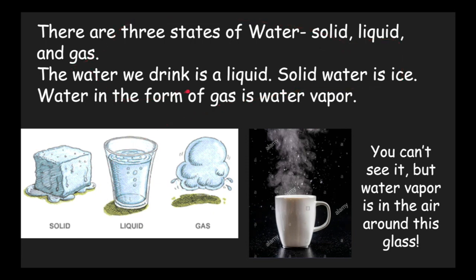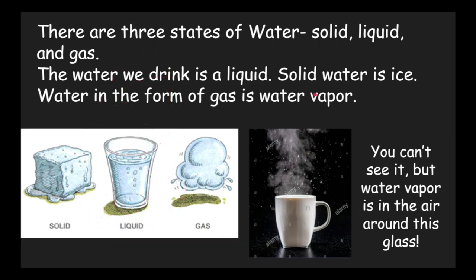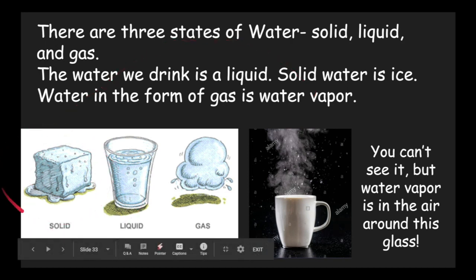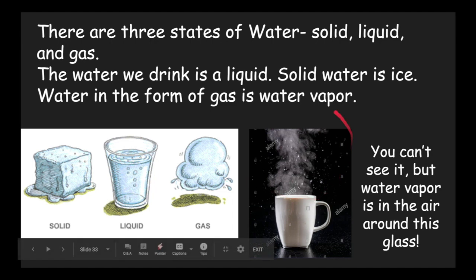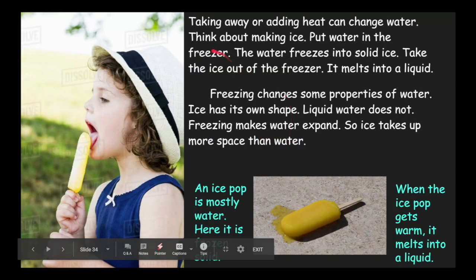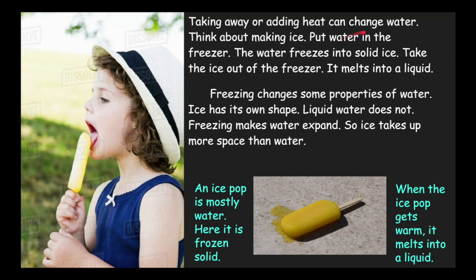The water we drink is a liquid. But when water is frozen, it becomes ice — it becomes a solid. It has a shape and all the molecules are very close together. Water in the form of gas is water vapor. This right here is called water vapor — water that is turning into a gas.